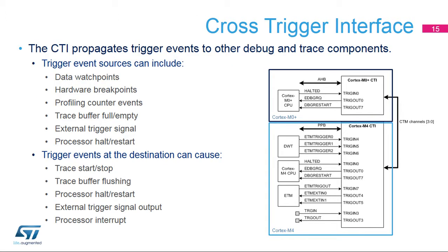Cross-triggering can be used in dual-core devices to halt both cores simultaneously. When one core hits a breakpoint, its halted output — indicating it has entered debug mode — propagates to the other core and causes it to enter debug as well. Similarly, both cores can restart simultaneously. The cross-trigger feature can also be used to halt the processor with an external trigger signal, such as an edge on one of the I/O pins. There is a Cross-Trigger Interface, or CTI, in each of the Cortex-M processors. To use any of the cross-trigger features, the CTIs must be programmed accordingly by the debugger.